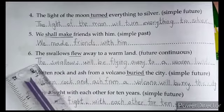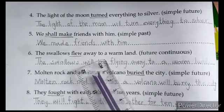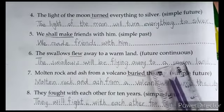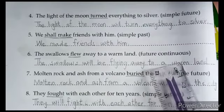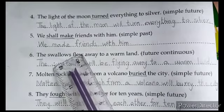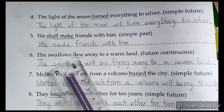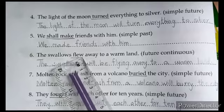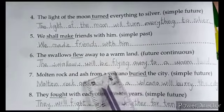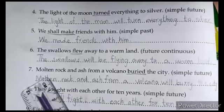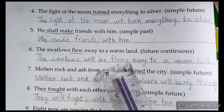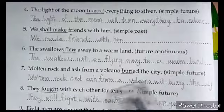Next sentence: 'The swallows flew away to a warm land' — change to future continuous. Future continuous means: 'The swallows will be flying away to a warm land.'